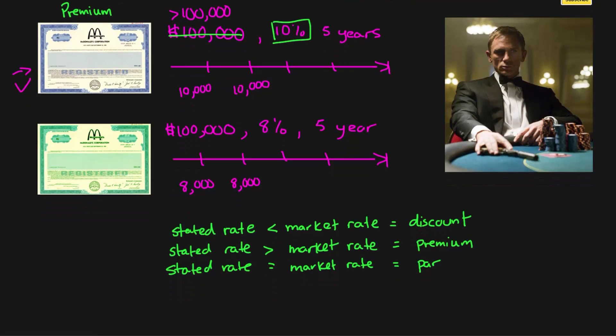And one point I wanted to make is that discounts and premiums do not represent which bond is better or worse to buy. All it represents is that the stated rate is less than the market rate or that the stated rate is greater than the market rate. So don't think that just because a bond is selling at a discount, that it's a better bond or that if it's selling at a premium, that it's a worse bond. That would be incorrect.